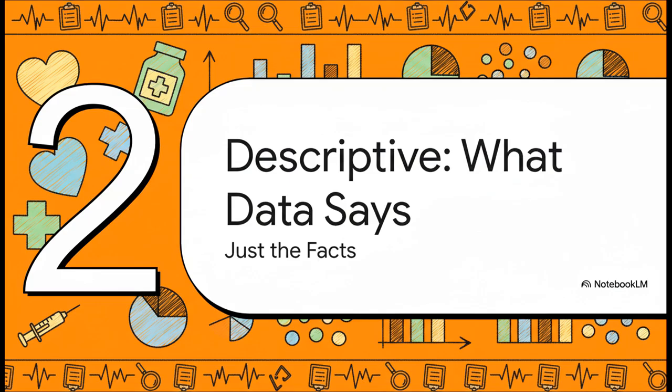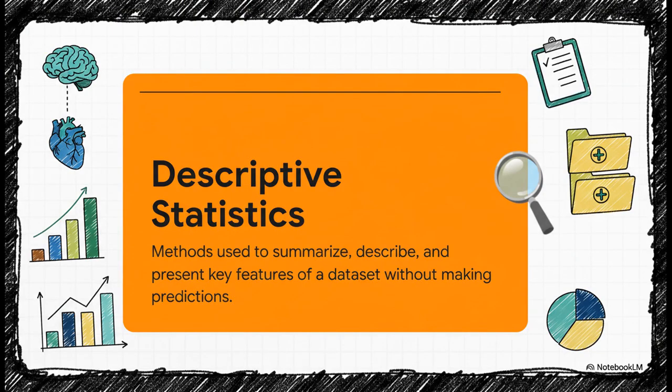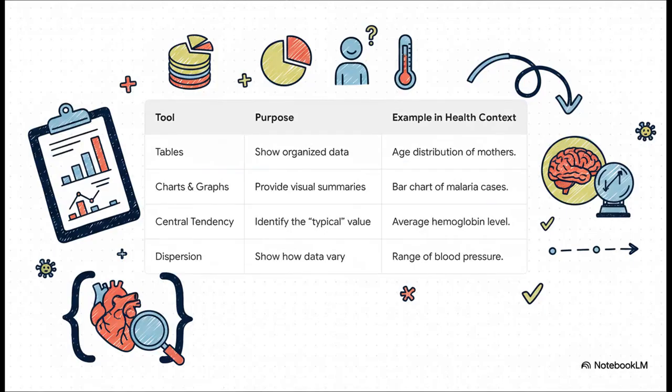Let's talk about descriptive statistics. This part is all about creating order from the chaos of raw numbers — just the facts. This branch doesn't guess or predict; it's not trying to read the future. It simply and very clearly reports the facts of the data that was collected. The toolbox includes your basic stuff like tables and charts, which are great for getting a quick visual look, but also ways to find that typical value in a group — the average — and to measure how spread out all the data points are.